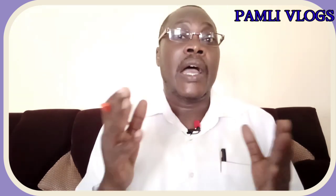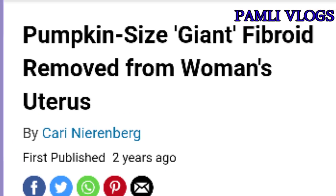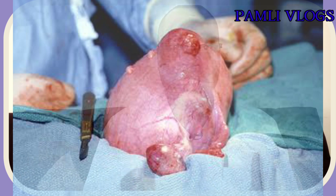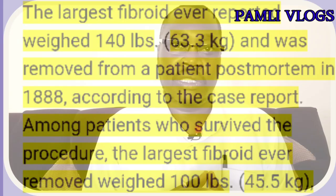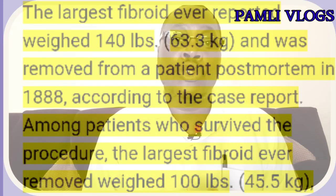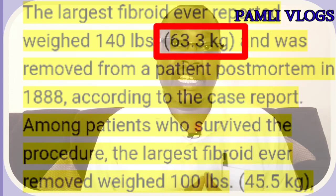Progesterone and estrogen play a significant role in the development of uterine fibroids, which is why they normally shrink or disappear with menopause. Did you know that uterine fibroids can grow as big as pumpkins? We call these giant uterine fibroids. Some have been extracted weighing around 40 kilograms, one removed post-mortem weighed almost 140 kilograms, and another documented case weighed about 63.3 kilograms.